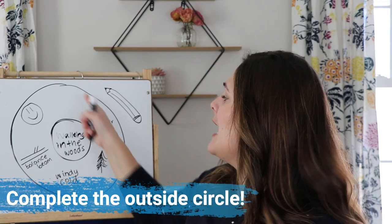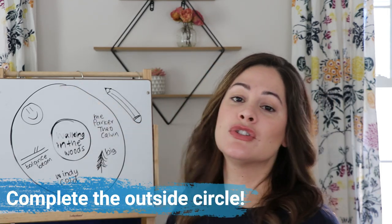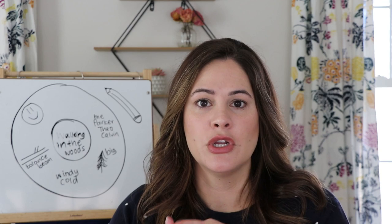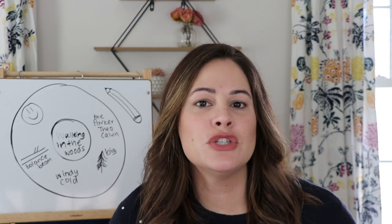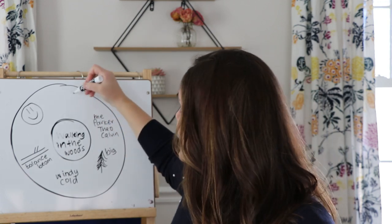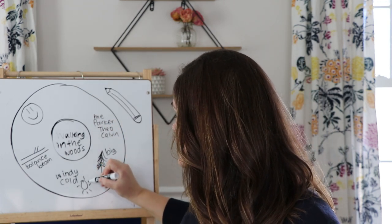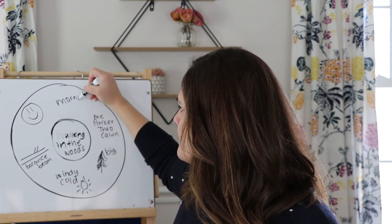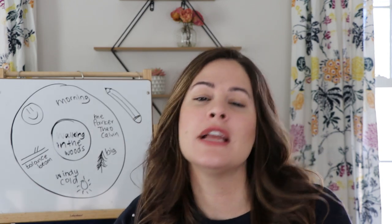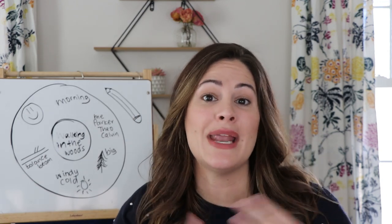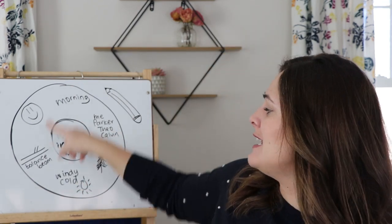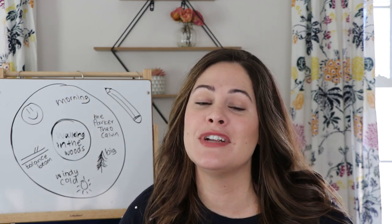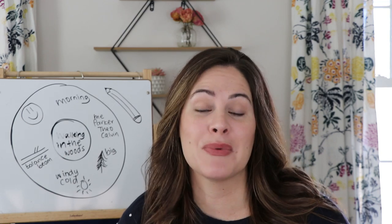Go ahead and pause this video, and on the outside of your circle I want you to ask yourself some of these same questions. Who was with you when this happened? What exactly were you doing? When did you do this? I went in the morning, and I also remember it was actually really sunny out — it was windy and cold, but the sun was shining. And where were you? Think about those question words: who, what, where, when, why, and how. See if you can add any details in pictures or in words on the outside of your circle. Pause the video, complete that, and when you come back you'll see what we're going to do next.